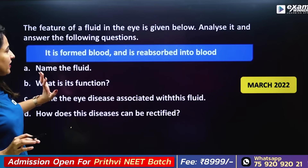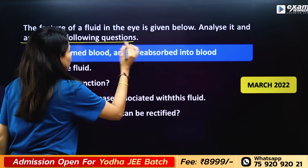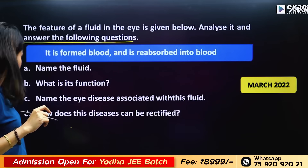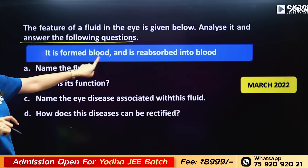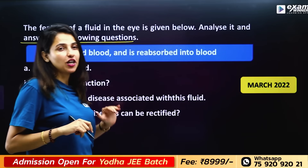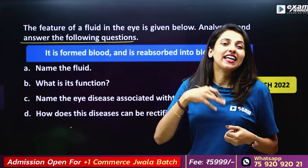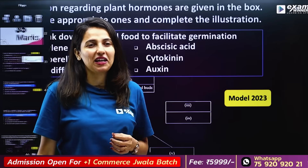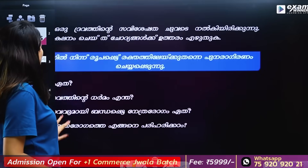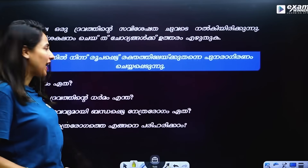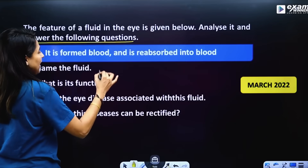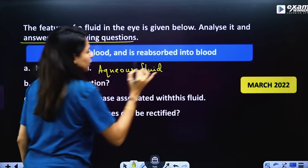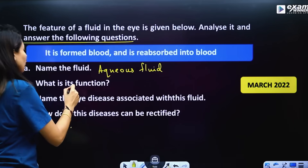The feature of the fluid in the eye is given below. Analyze it and answer the following question. In our eyes we have certain features. The fluid is formed from blood and reabsorbed into blood. Aqueous fluid means aqueous humor — what is its function?